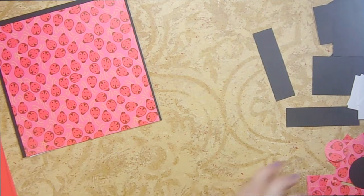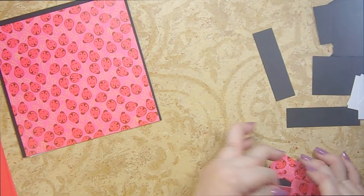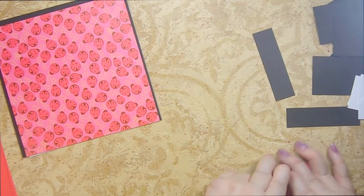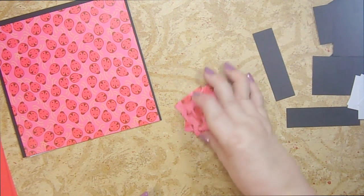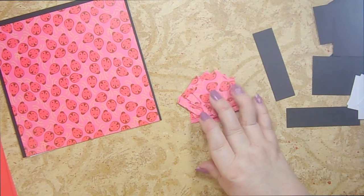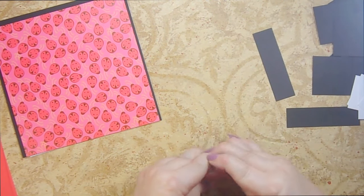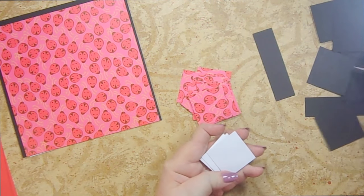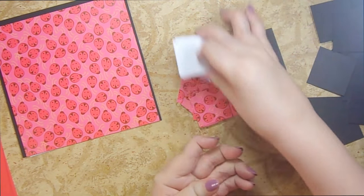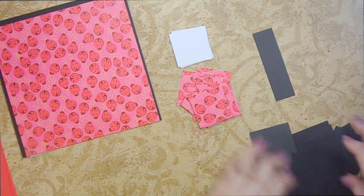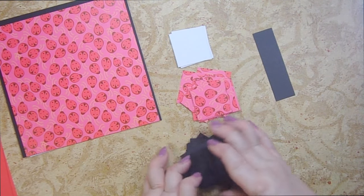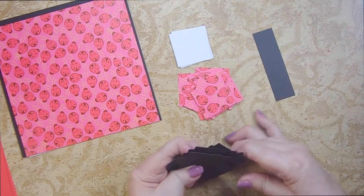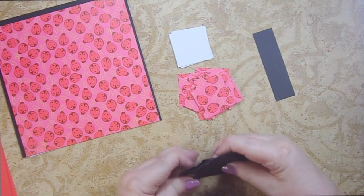Then you're going to need, it depends on if you are going to do a sentiment or not, and I'm going to do a sentiment going around all four sides. So you're going to need 16 of these that are one and a half inches square. Then you'll need four white ones that are one and a half inch square. Then you'll need 20 of these that you're going to layer those onto, and these are one and three quarters inch square.